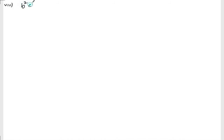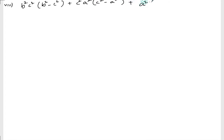The question is: b squared c squared whole into b squared minus c squared, plus c squared a squared whole into c squared minus a squared, plus a squared b squared whole into a squared minus b squared.